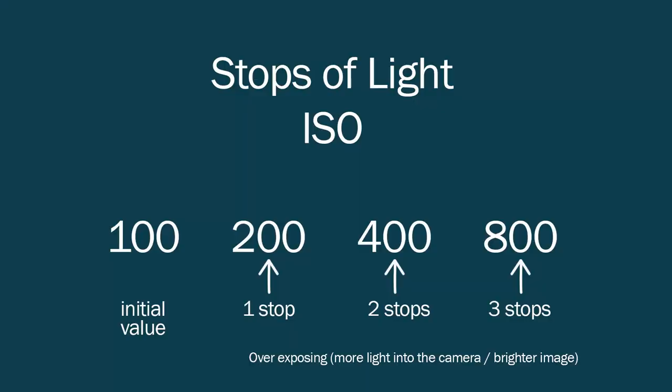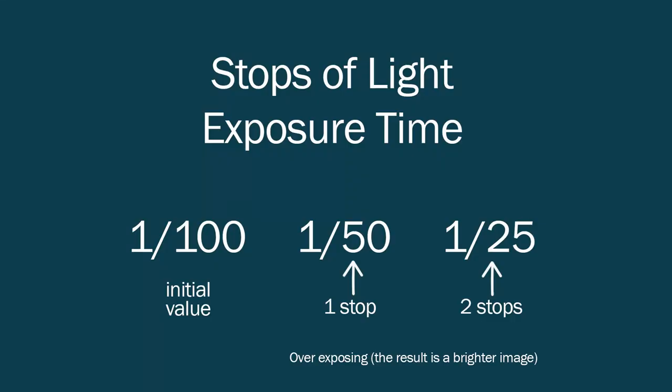Let's give an example. ISO 100 — if I want one more stop of light, I go to ISO 200. If I want two stops of overexposure starting from 100: one stop is 200, two stops is 400 ISO. With exposure time — let's say I have 1/100th of a second and I want two times more light: I go to 1/50th of a second, and that's one stop of light. If I want two stops of overexposure starting from 1/100th, I go to 1/50th first and then 1/25th of a second.